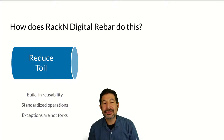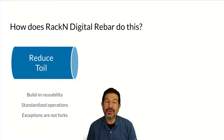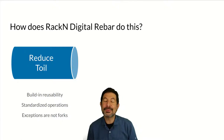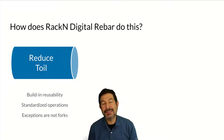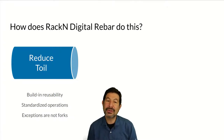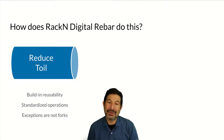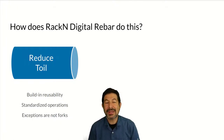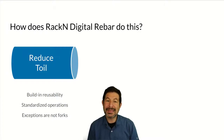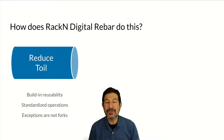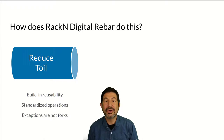We do this by being very specific and deliberate in how we design. By reducing toil, we're working to look at built-in reusability so that components work quickly out of the box, and help standardize operations so that multiple teams and organizations can share and reuse work — doing automation in standardized ways over and over again. We also understand that exceptions to operations are not forks; exceptions should be minimal and contained, not requiring a complete copy just to handle one difference.